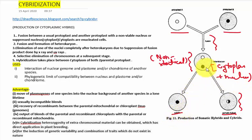But in the case of cybrid, there will be the formation of heterokaryon takes place. Then after that the cybrid formation takes place by the nuclear content of only one parent and the cytoplasmic content of both the parents.